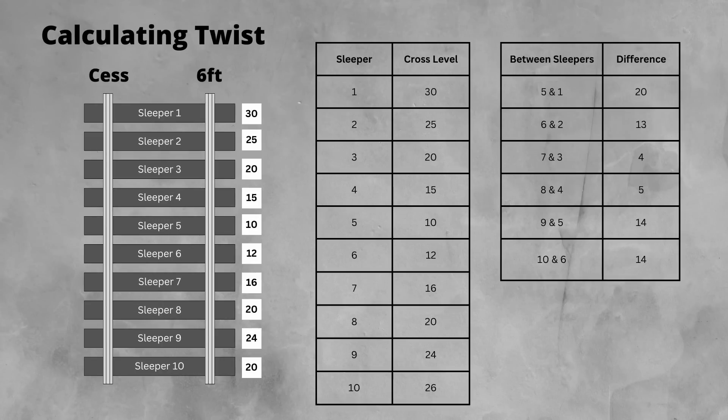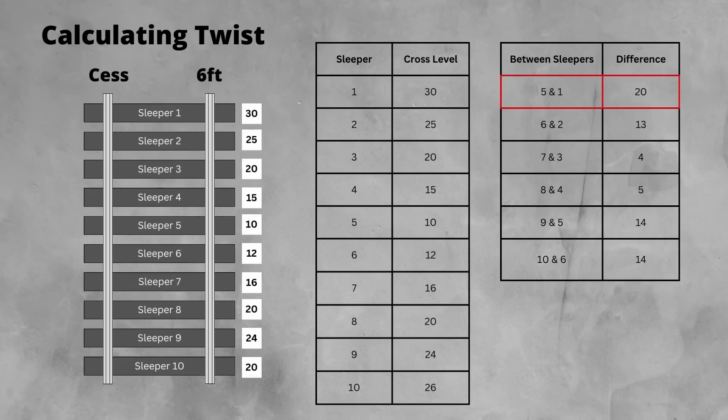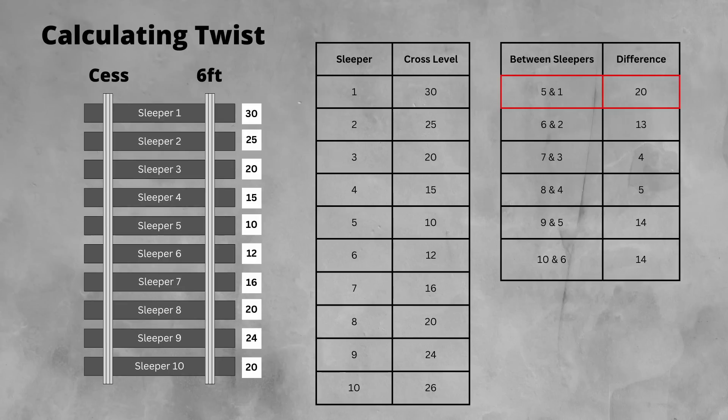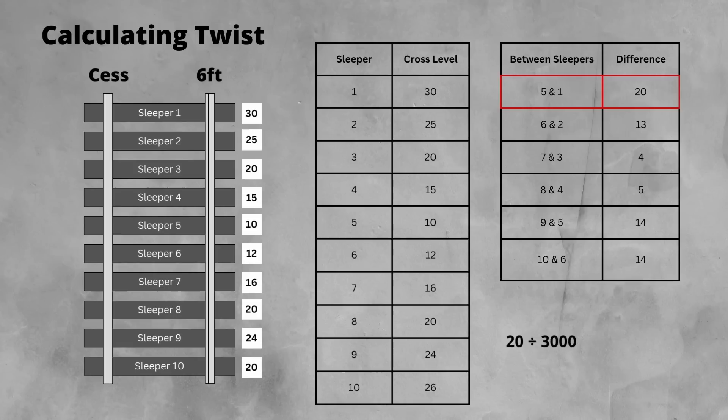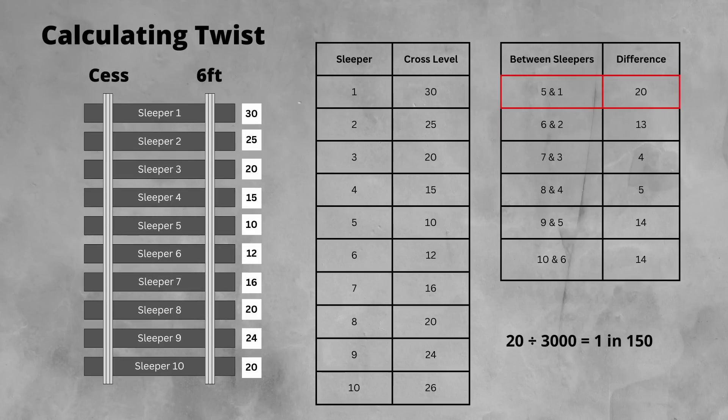When errors are on the same rail, we need to subtract the numbers to find the difference. So we've done all the differences, and the worst twist value over the length is between sleepers 5 and 1. But how do you quantify this level of twist so that it's comparable to other faults? We take the difference and divide it by the length. So 20 divided by 3000. Remember, we're working in millimetres, which gives us 1 over 150. So this twist can be described as a 1 in 150 twist. This is the gradient of the twist.